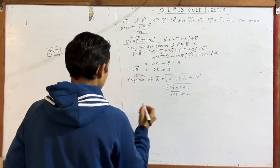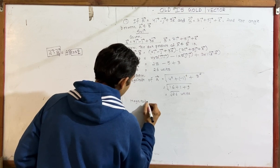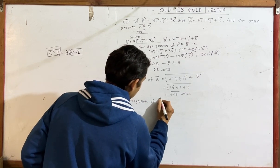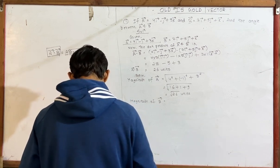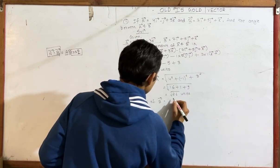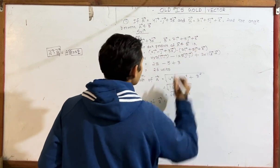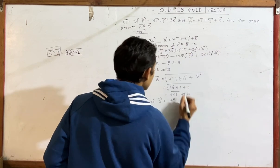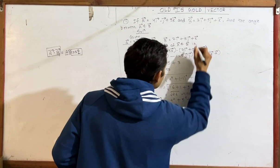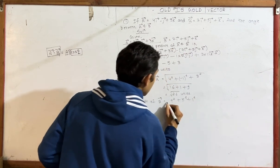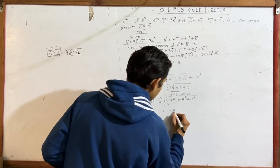Now magnitude of B vector. So magnitude of B vector equals root of 7 squared plus 5 squared plus 1 squared, which is root of 49 plus 25 plus 1, giving root of 75.